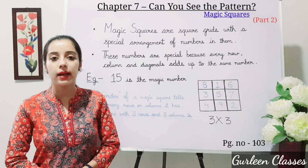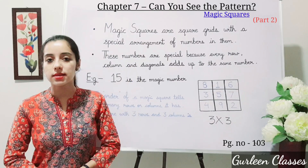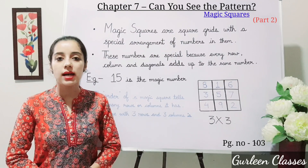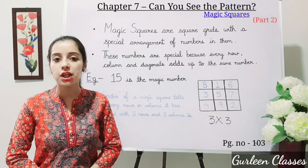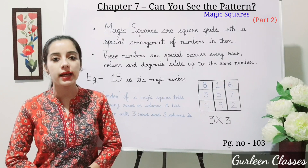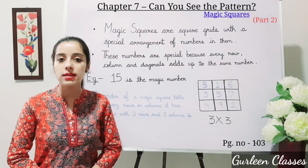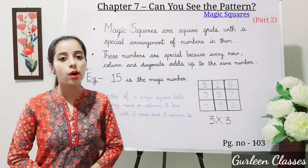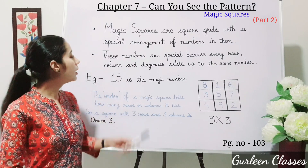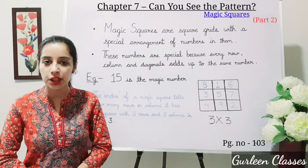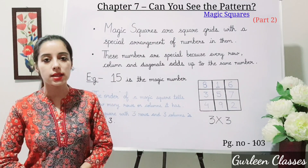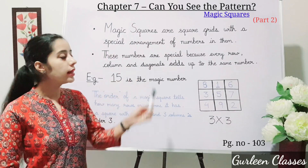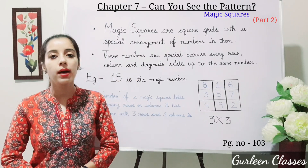The next topic is Magic Squares. Magic Squares are square grids with a special arrangement of numbers in them. These numbers are special because every row, column, and diagonal adds up to the same number.